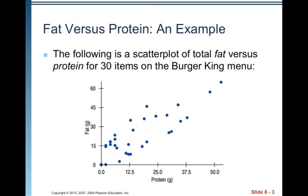Fat versus protein is going to be our example to get us going. The following is the scatter plot of total fat versus protein for 30 items on the Burger King menu. You've got protein on the horizontal, fat on the vertical, and you can see how they match up.